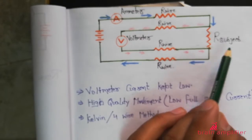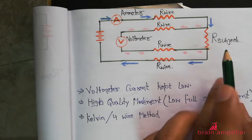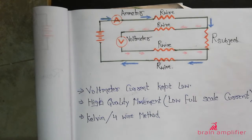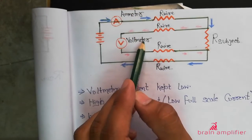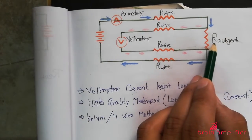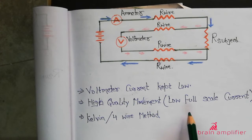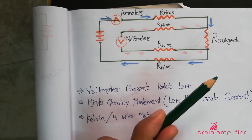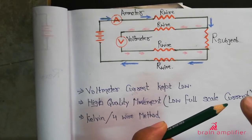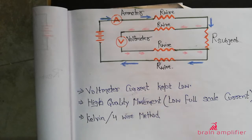If I have to measure a very low resistance — in the milli-ohm or micro-ohm range — the current I need to supply is very high. Because resistance is very low, the current to be passed is very high. So the current leads are thicker and the voltage leads are thinner. This is how we can accurately measure very low resistance values. This method is also called the Kelvin measurement method.